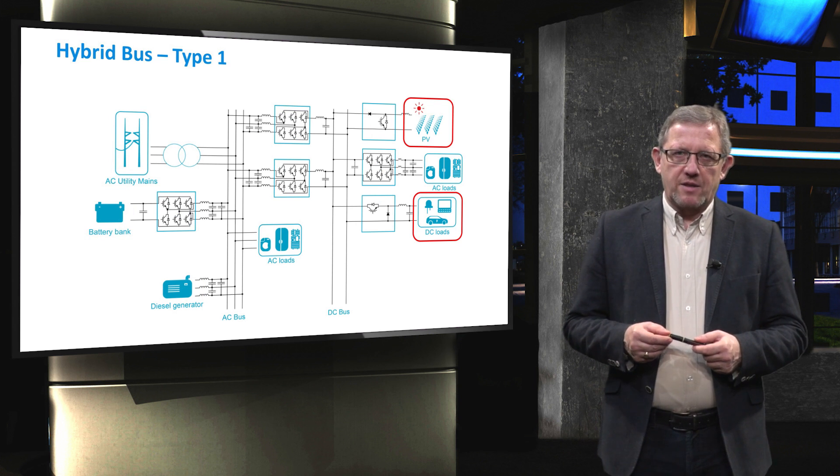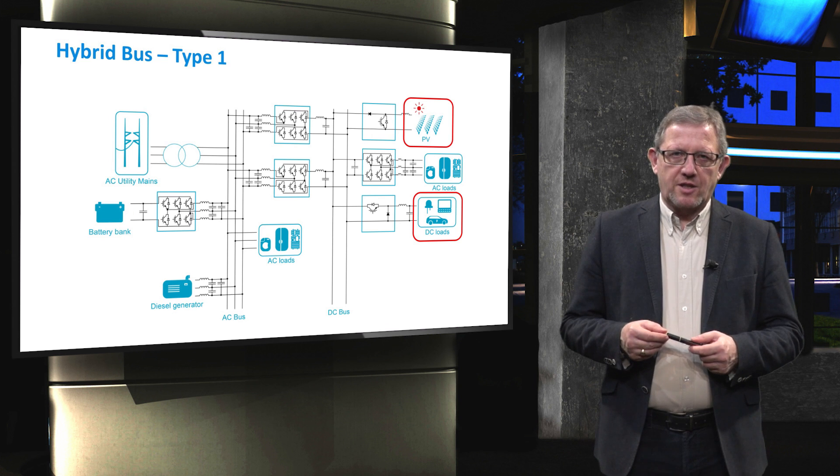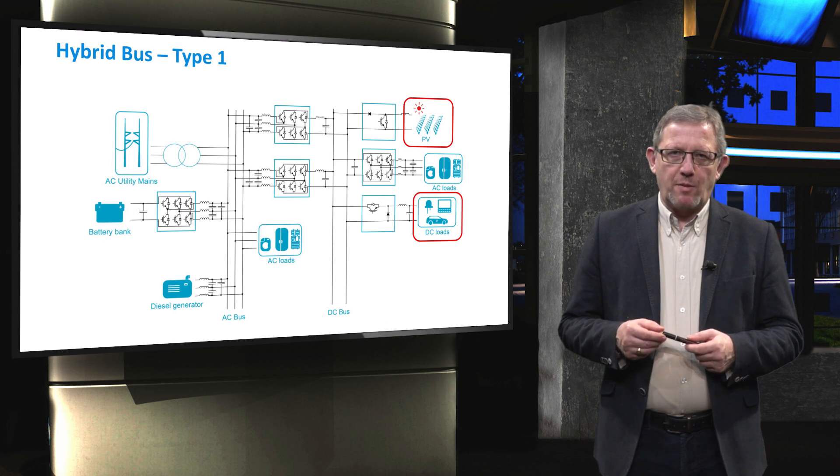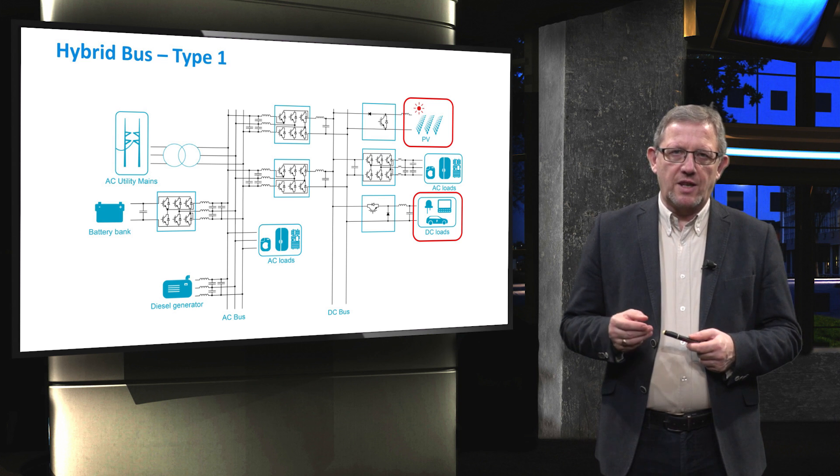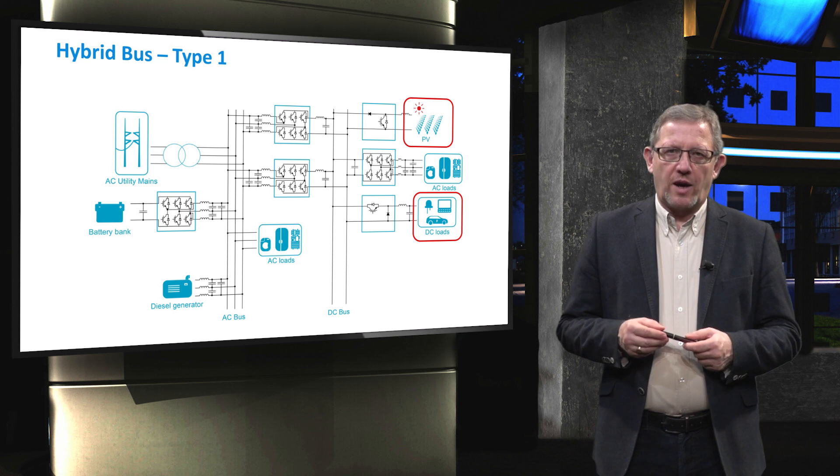At the DC bus, the photovoltaic solar is stepped up through a boost step-up converter. In a similar way, DC loads are also connected using a buck DC converter as typically the voltage of DC link is higher than the one of the loads.